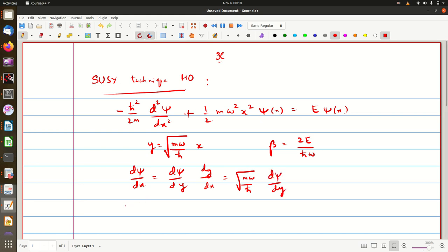If you want d square psi by dx square, we have to go d by dx of d psi by dx, which is root m omega by h cross times d by dy of d psi by dx. So d psi by dx is nothing but root m omega by h cross d psi by dy.